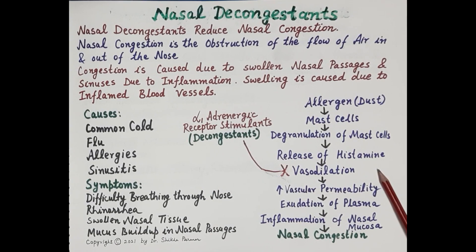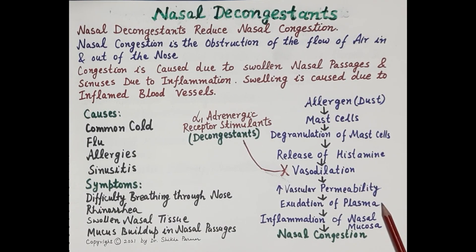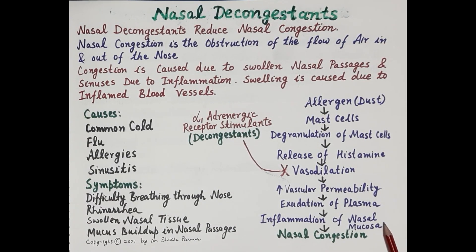Histamine dilates blood vessels located in the nasal mucosa, increasing their permeability. The blood vessels become leaky and there is leakage of fluid from the blood into the nasal mucosa — that is, exudation of plasma into nasal tissue. This leakage causes inflammation and edema of the nasal mucosa. Apart from this, inflammation also stimulates excessive secretion of mucus.